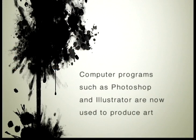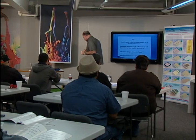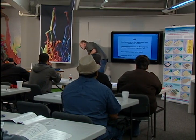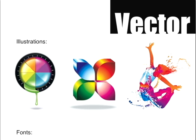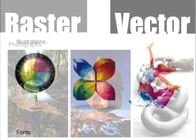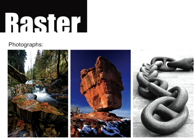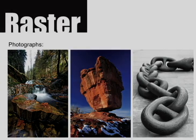Computer programs such as Photoshop and Illustrator are now used to produce art. Illustrator is vector-based. A vector is a point, and that's how we produce illustrations, fonts, and logos. Photoshop is raster — if it's a photograph, that's a raster.